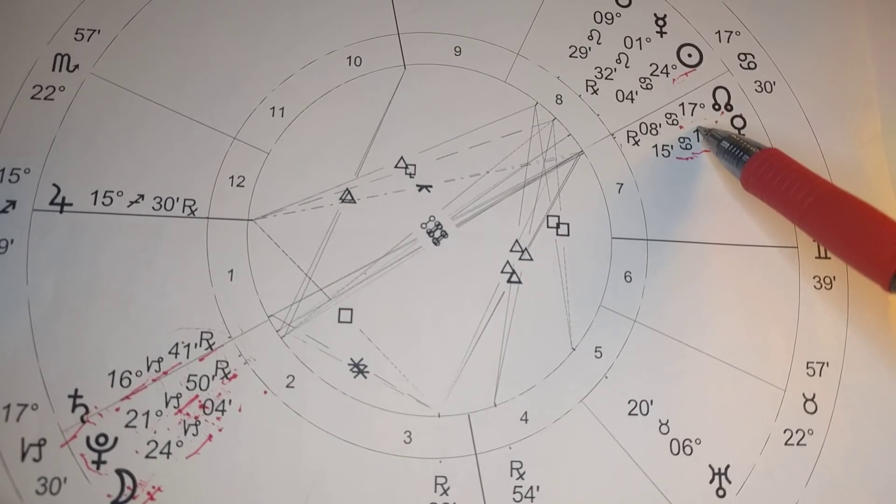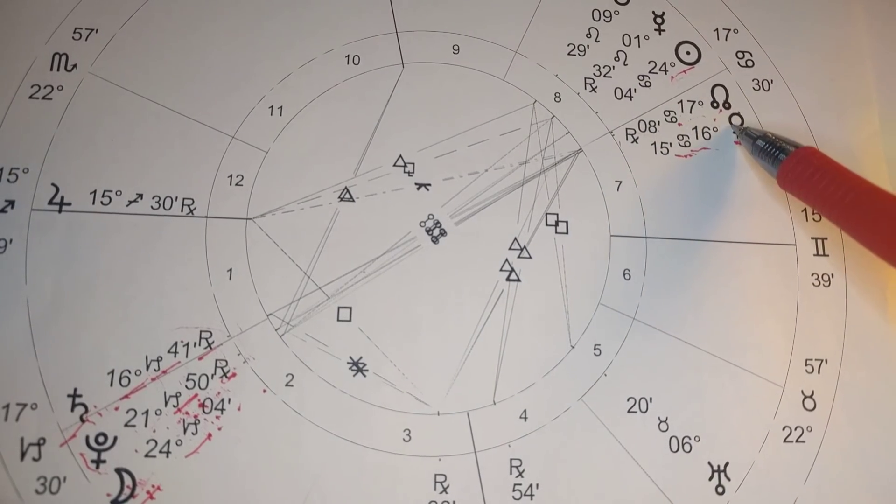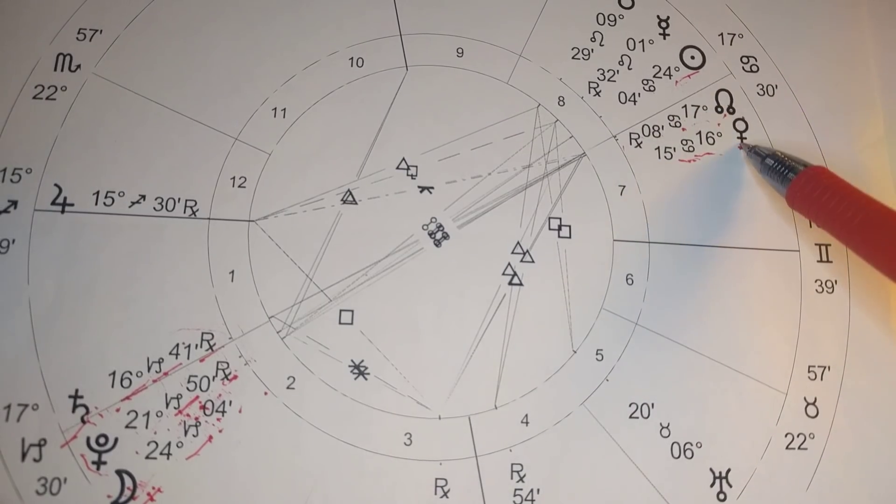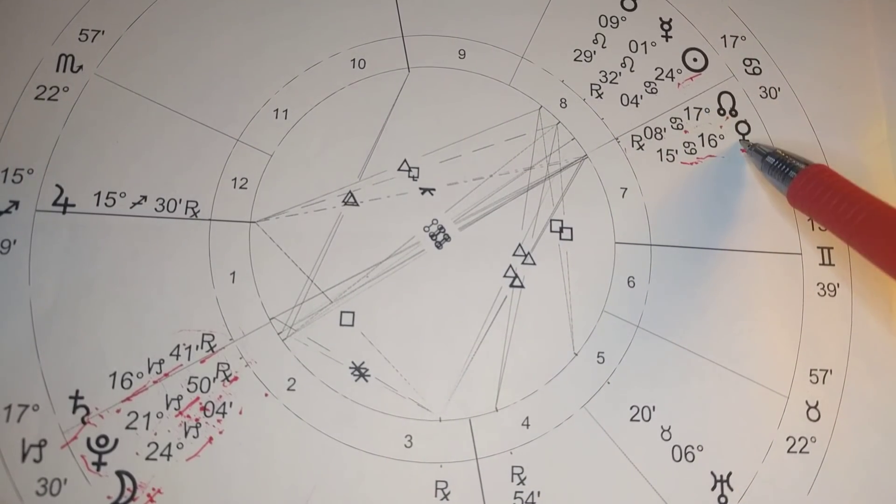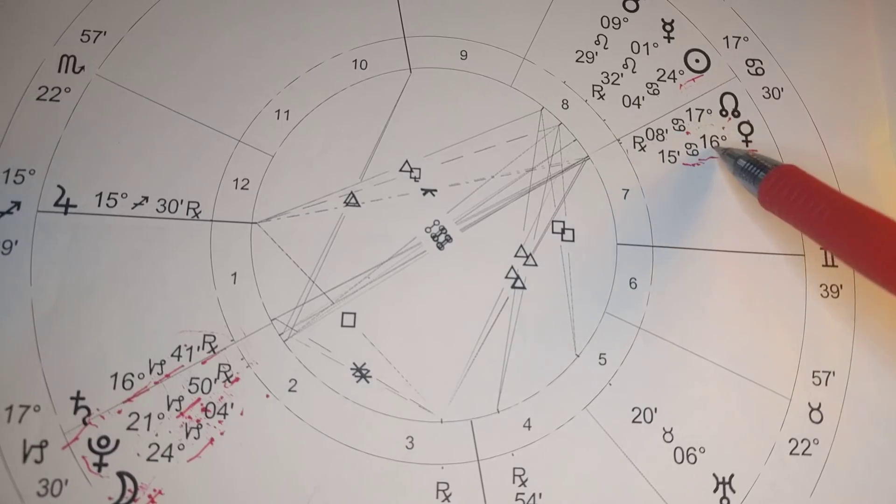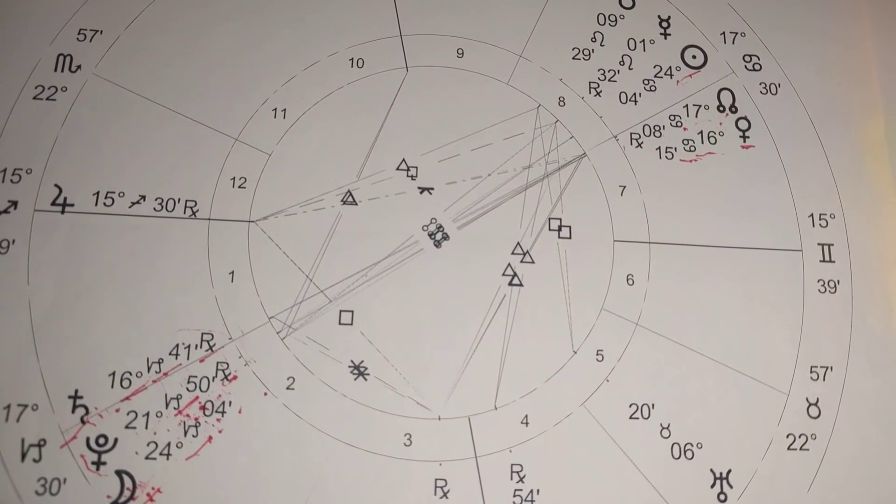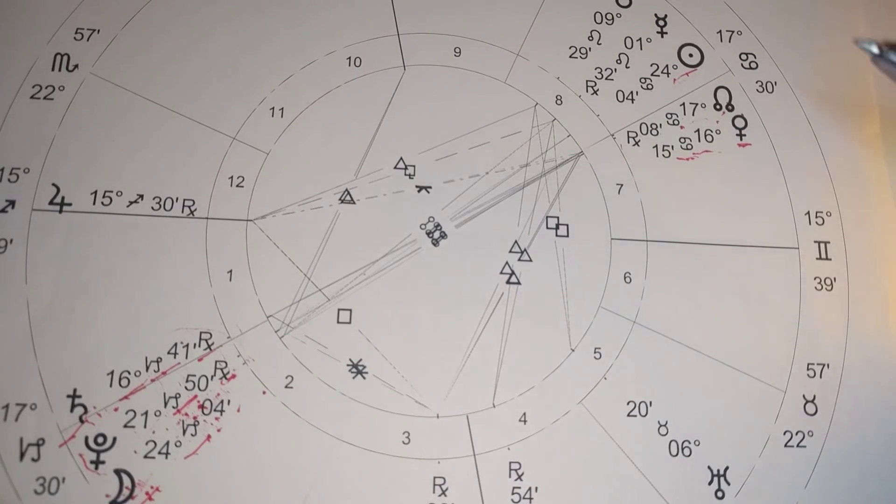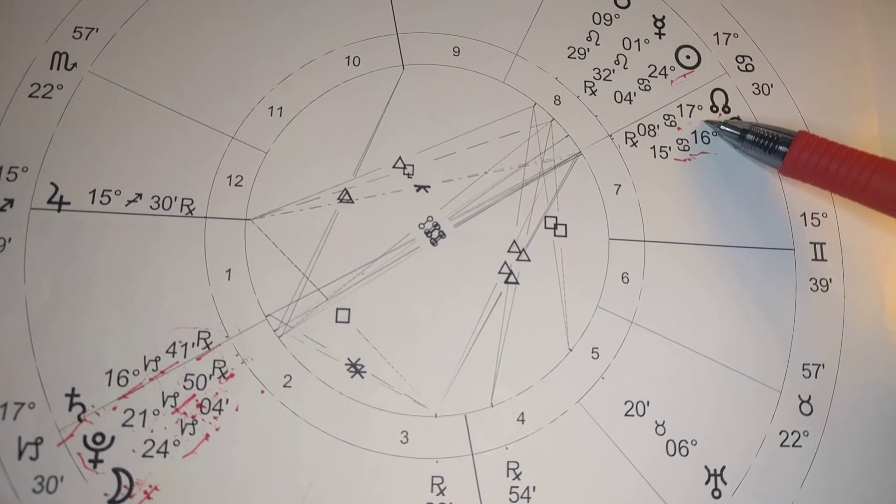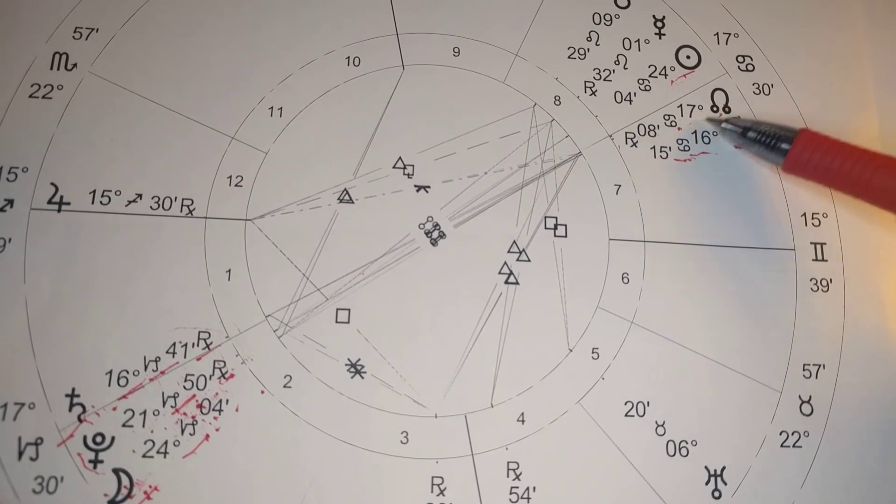But the Cancer energy here, especially with Venus, is to trust yourself, to trust your heart, to trust what you need, and to understand that you are equipped with the emotional compass that brings you back home to yourself.